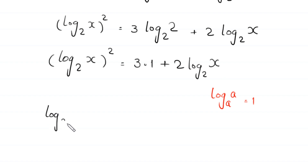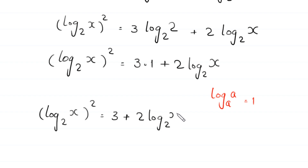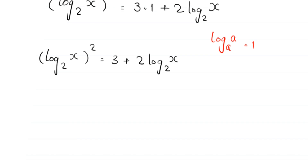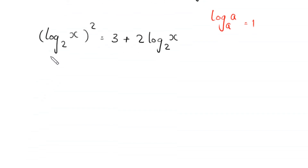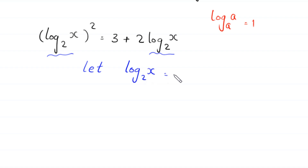So log base 2 of x squared equals 3 plus 2 times log base 2 of x. Since the same expression log base 2 of x appears on both sides, we let log base 2 of x equal m and substitute into this equation, giving us m squared is equal to 3 plus 2m.